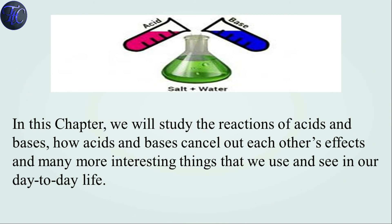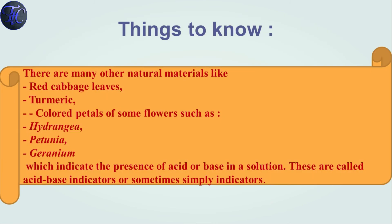In this chapter, we will study the reactions of acids and bases and how acid and base cancel out each other's effect, and many more interesting things that we use and see in our day-to-day life. There are also many other natural indicator materials like red cabbage leaves, turmeric, and some colored petals of flowers — hydrangea, petunia, geranium — which indicate the presence of acid or base in a solution. These are often called acid-base indicators, or simply indicators.